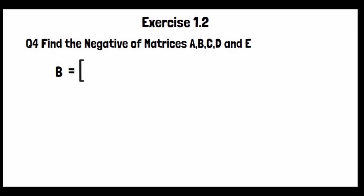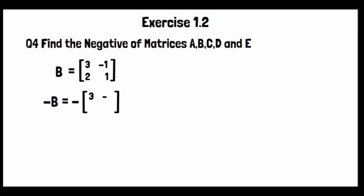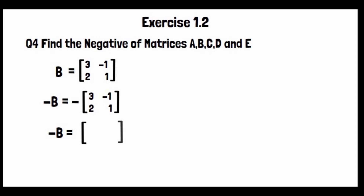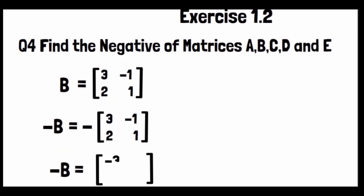Exercise 1.2, Question 4, part V: The given matrix is [3, -1; 2, 1]. To find its negative matrix, we write minus D equal to minus of [3, -1; 2, 1]. When minus operates inside, all signs change: 3 becomes -3, -1 becomes 1, 2 becomes -2, and 1 becomes -1.